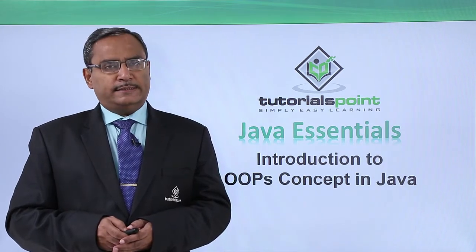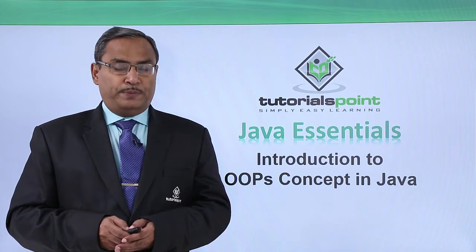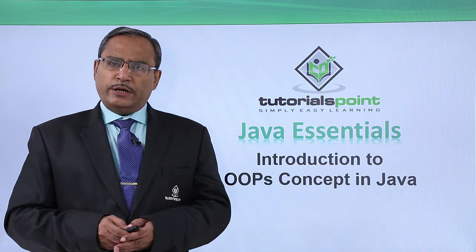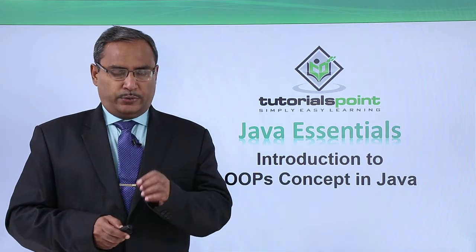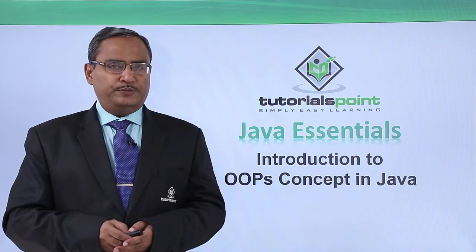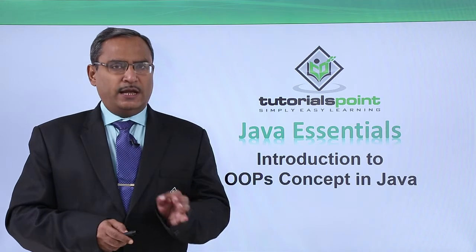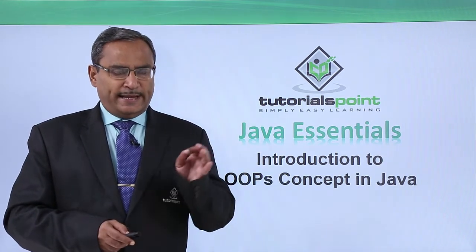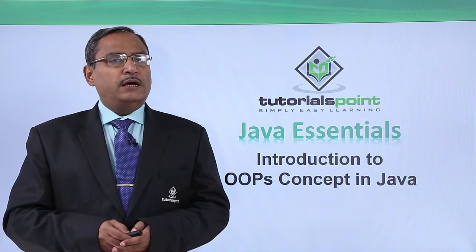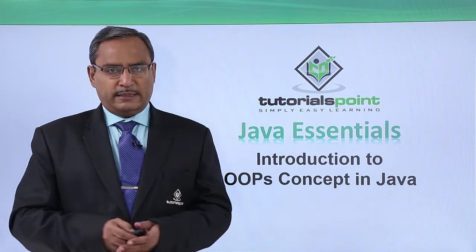We are starting with a new chapter: introduction to OOP concepts in Java. Object-oriented programming is a technique with the help of which we can do our programming using classes and objects. Classes are nothing but the blueprints of objects, and objects are nothing but instantiation of a class. We have multiple different properties of OOP programming, so let us discuss all of them in this chapter.